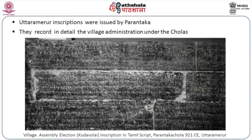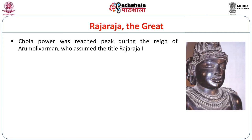The Uttaramerur inscriptions record in detail the village administration under the Cholas. After the death of Parantaka I, for nearly 30 years, the Cholas suffered a setback, and this period is considered a dark period. The Chola power reached its peak during the reign of Arumoli Varma, who assumed the title Raja Raja I.